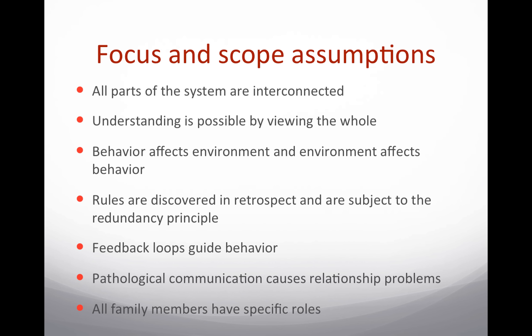Some focus and scope assumptions: all parts of the system are interconnected, meaning the whole is greater than the sum of the parts. A family is much more than a collection of people who live together — it's a social system with its own rules, communication patterns, and power structure. Understanding is possible only by viewing the whole family, because what happens in one part of the system affects the other parts, and that is at the core of this theory. Behavior affects environment and environment affects behavior. In studying families, we are usually concerned with the feedback whereby some of the output of a system becomes input.